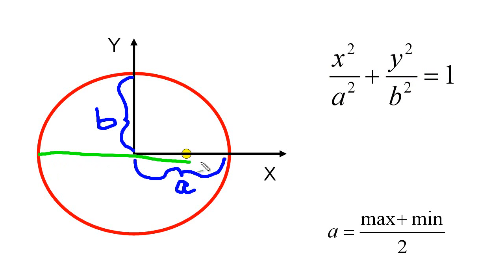This long axis is called the major axis, and this short axis is called the minor axis. A and B are called the semi-major and semi-minor axes. We only need to know A equals max plus min over 2 to do our Mars calculation.